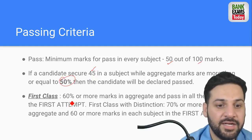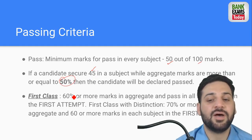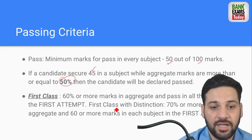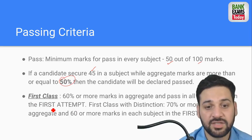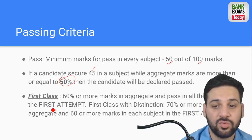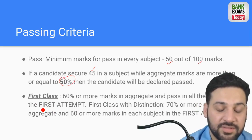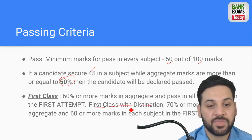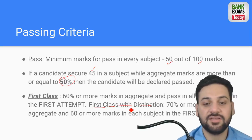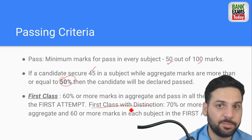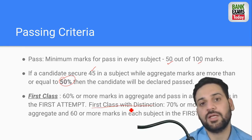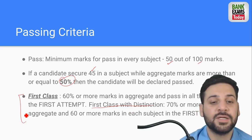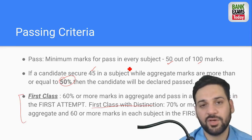If you score 60 marks aggregate in the first attempt, that is first class. First class with distinction is awarded if you score 70 percent. These points are important, but the most important part is the 50 percent passing requirement.